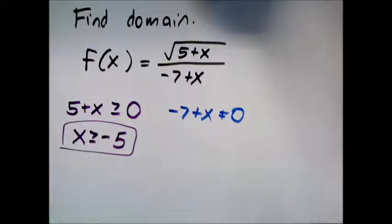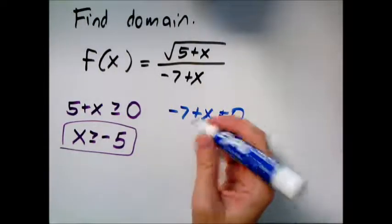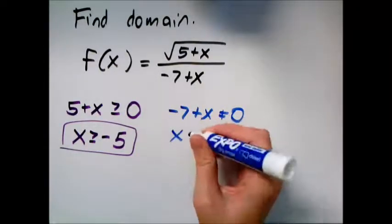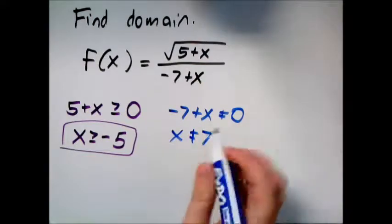So there's one constraint on my domain. I can't use any number smaller than negative 5. And then here if I add 7 to both sides I also can't use 7.